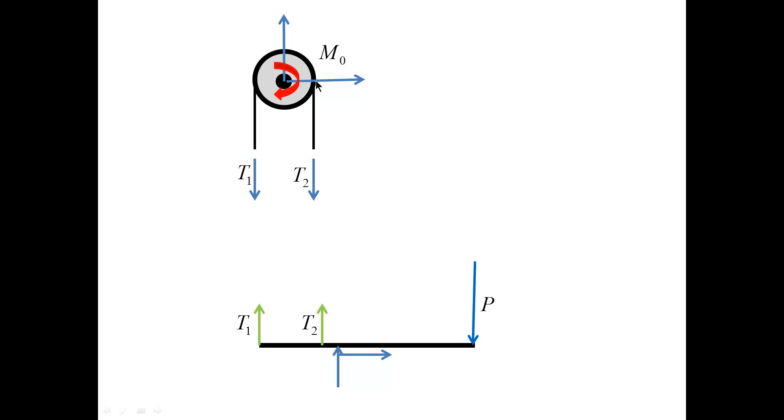Friction between the belt and the wheel is essential because it allows us to have T1 not equal to T2, and these two different forces will balance M0.